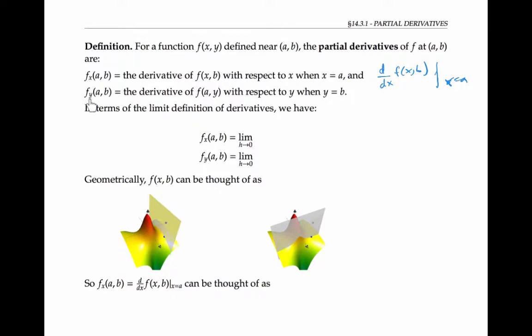When we write f sub y of AB, that means we hold x fixed at a and let y vary. And then we compute the derivative d/dy of this function of y, f of ay, when y equals b.